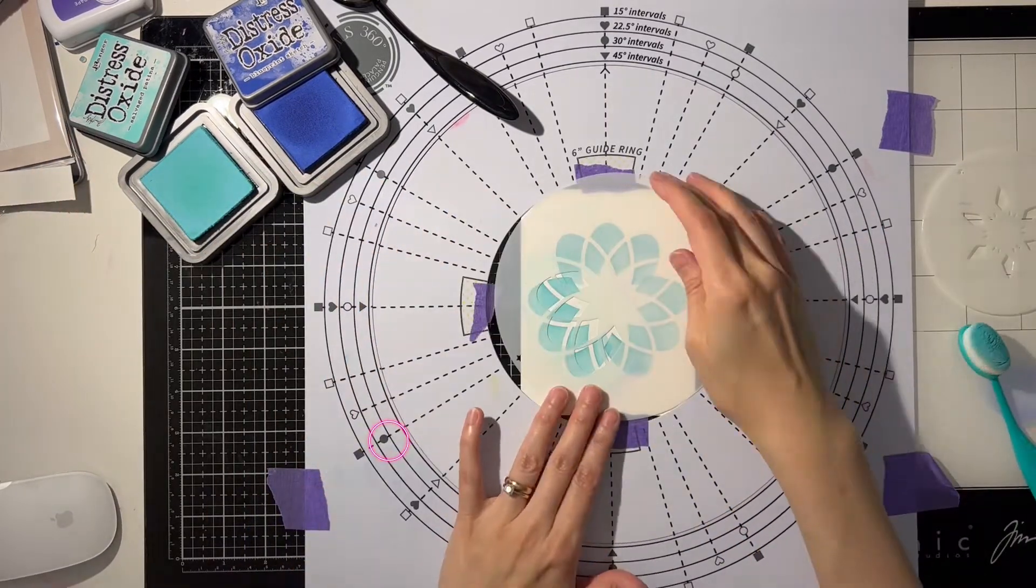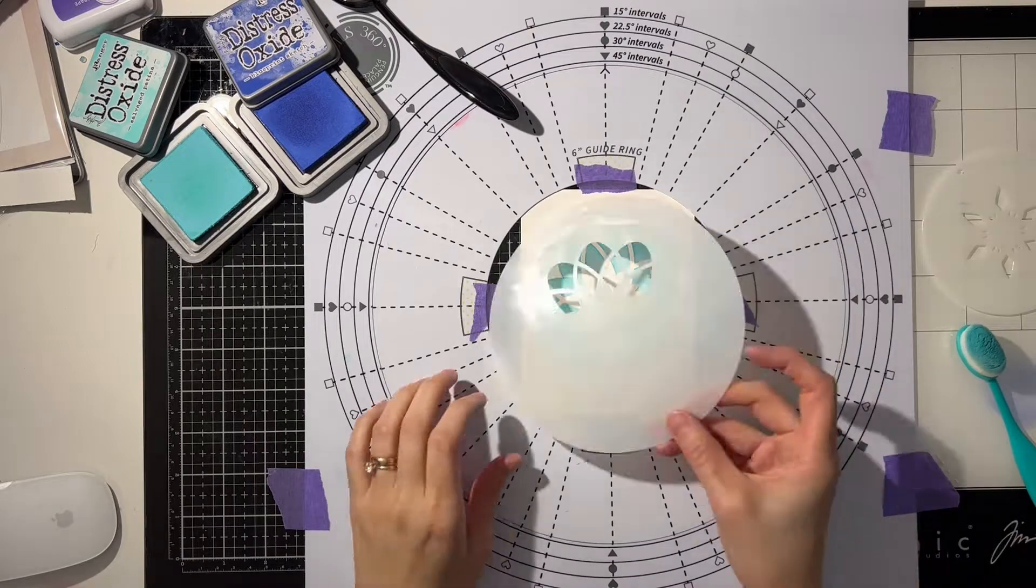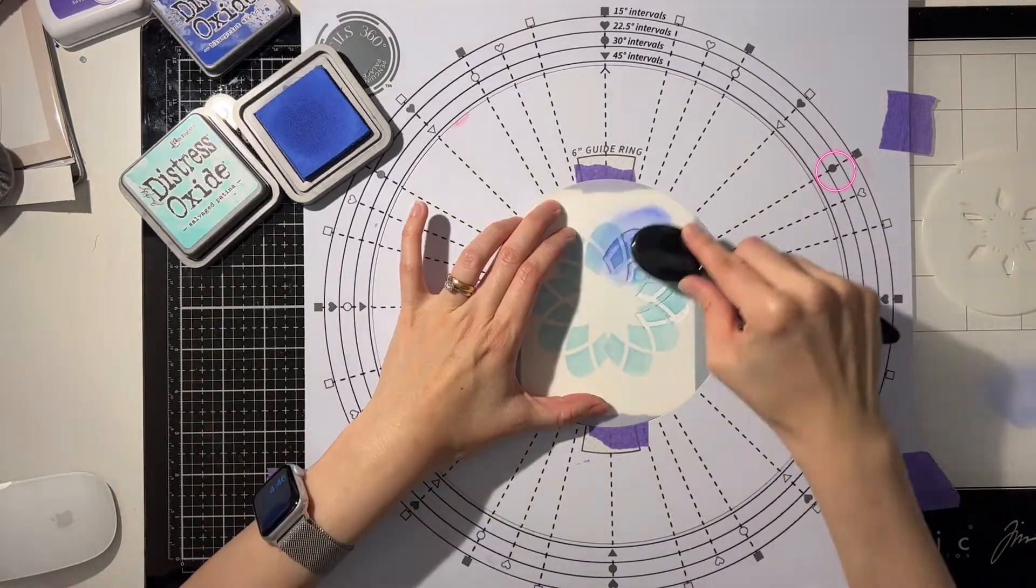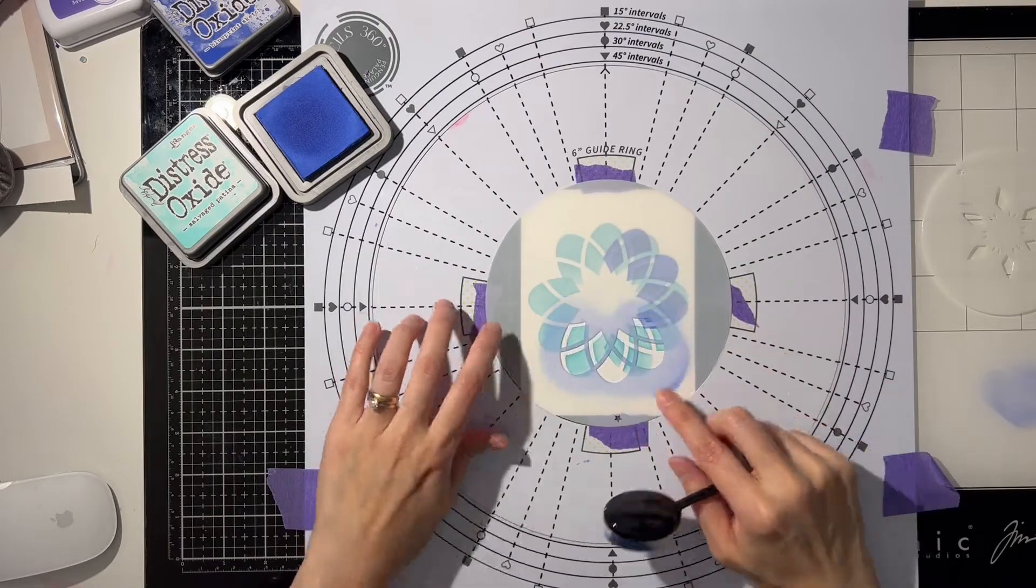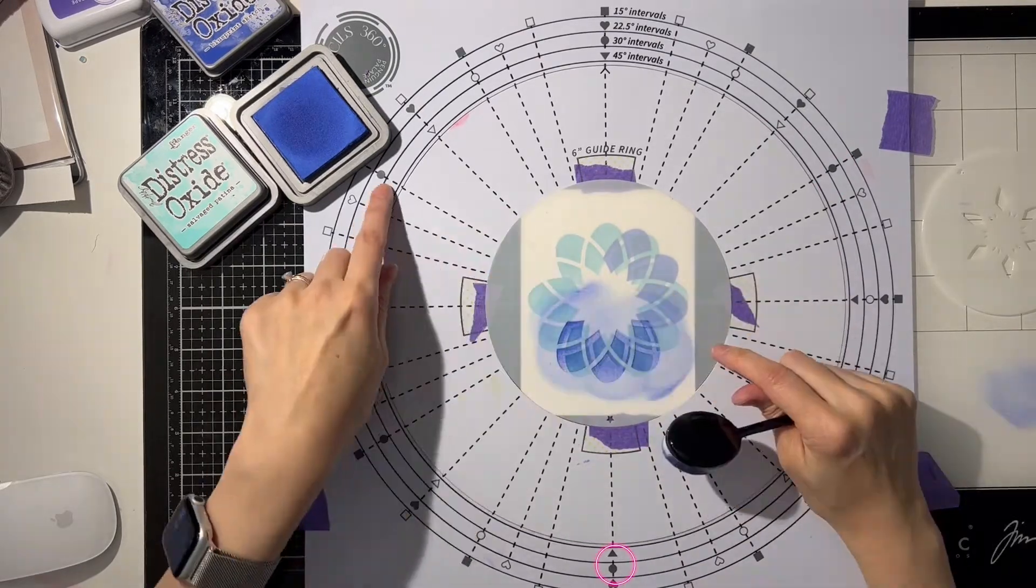Now I'm ready for my second color blueprint sketch. I'll be starting on the second solid circle, and just repeating what I've done with my first color, jumping four circles in each turn.